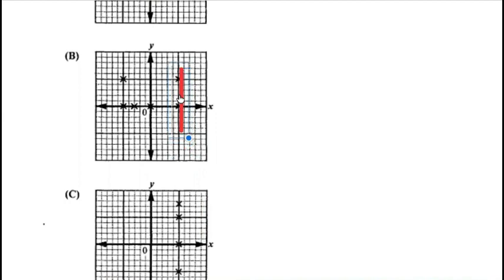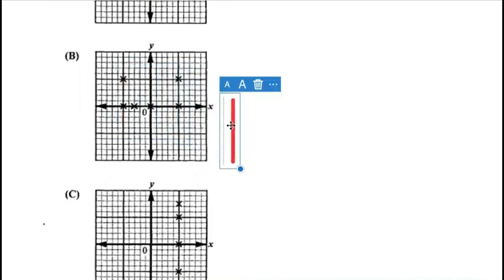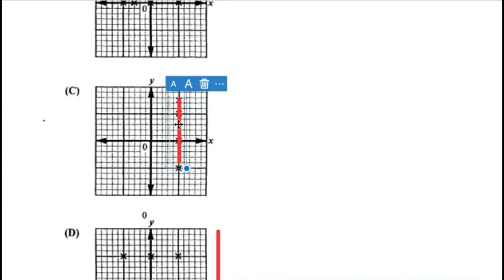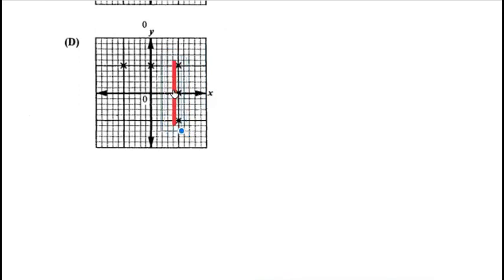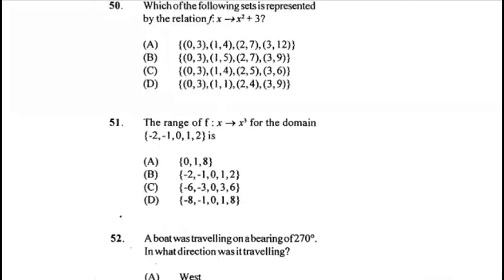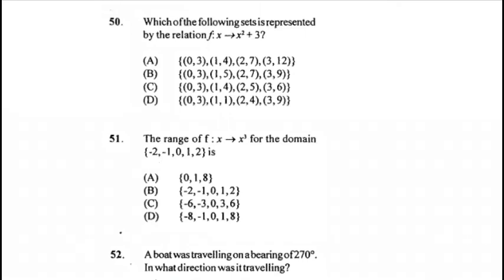Checking the other options: with B, the vertical line passes through two points at some position, so B is not a function. Graph C also has the vertical line passing through more than one point, and the same for D. Therefore the answer for 49 remains A.